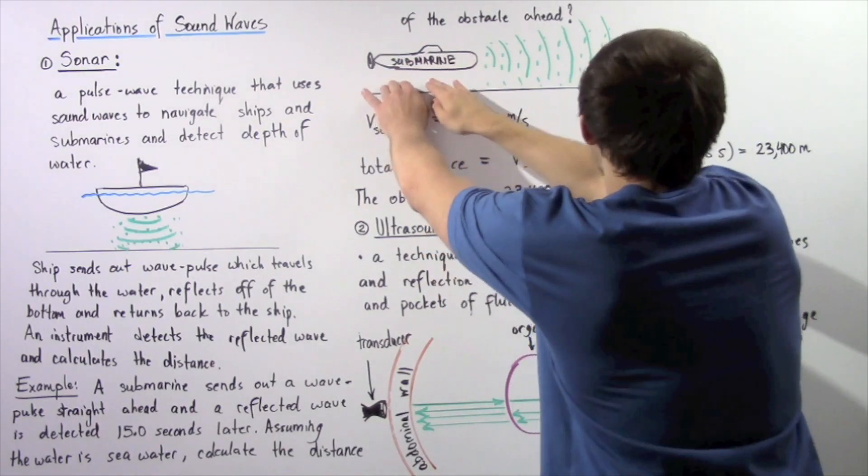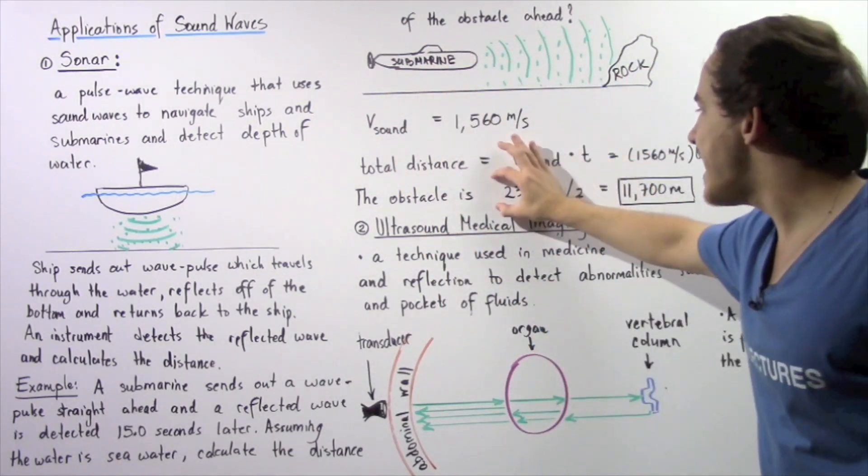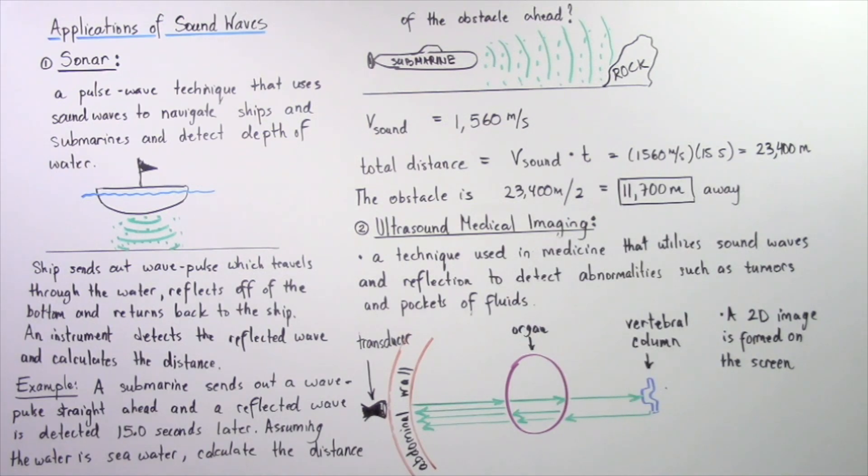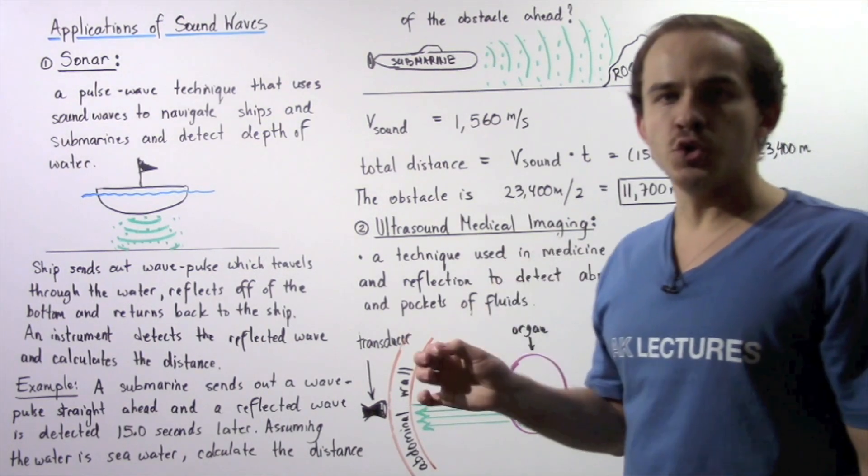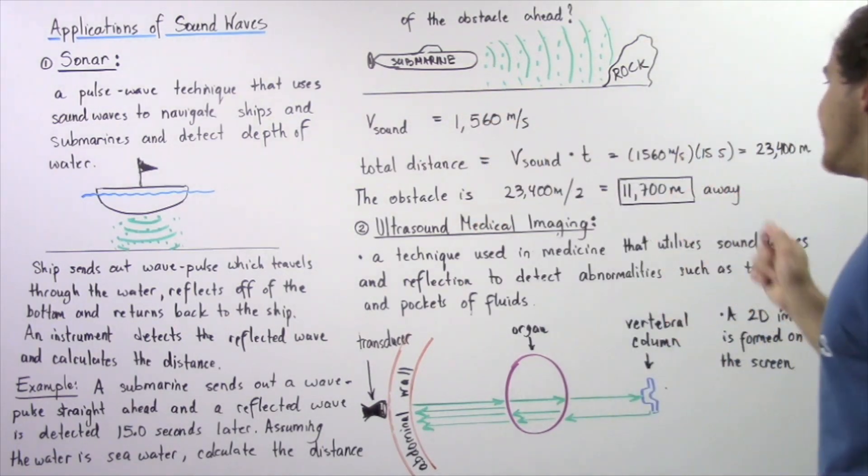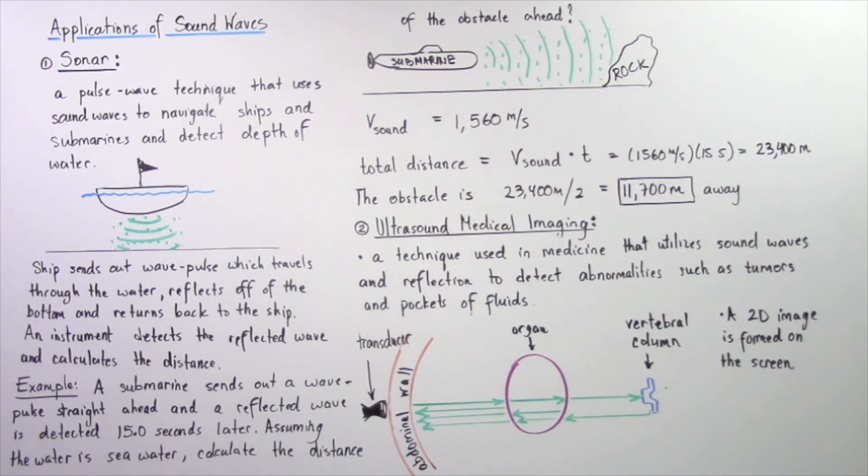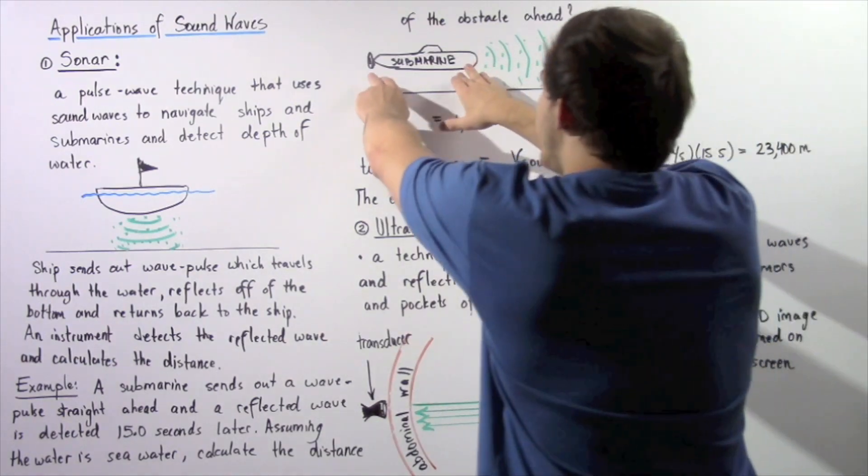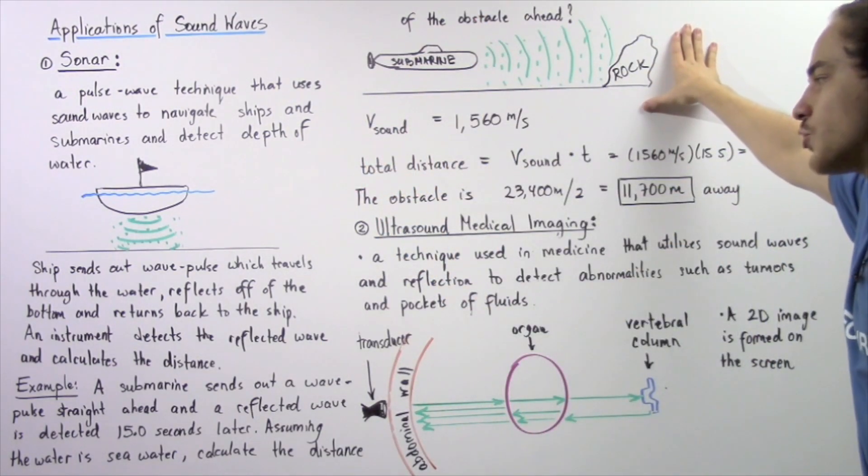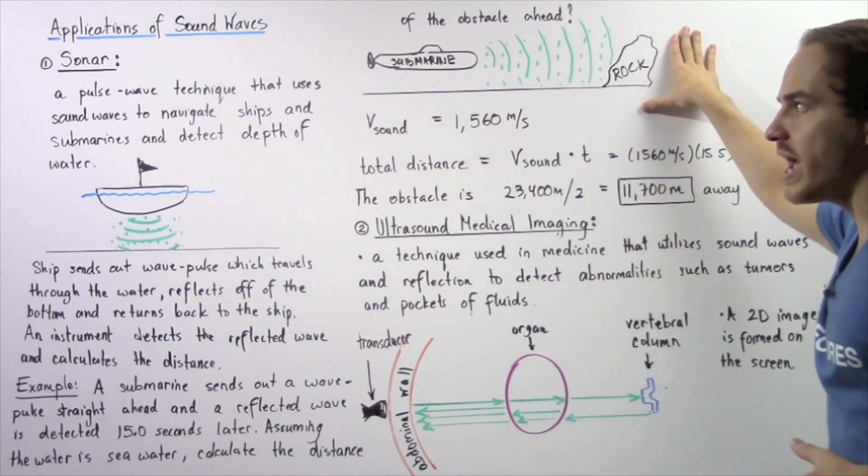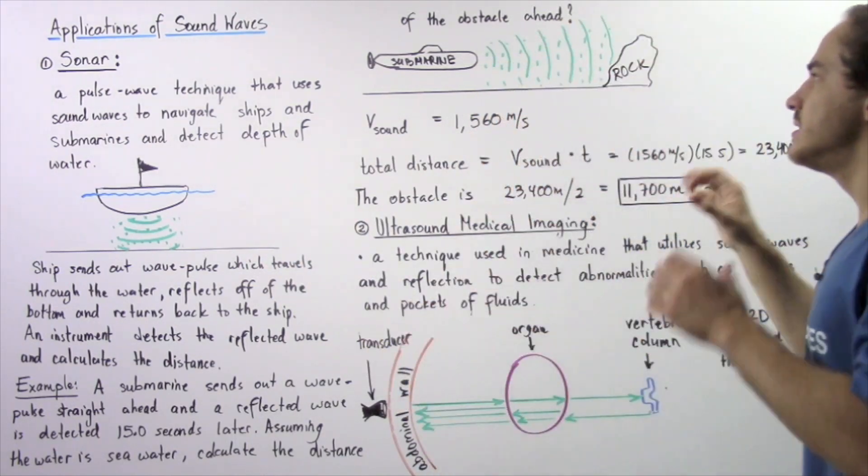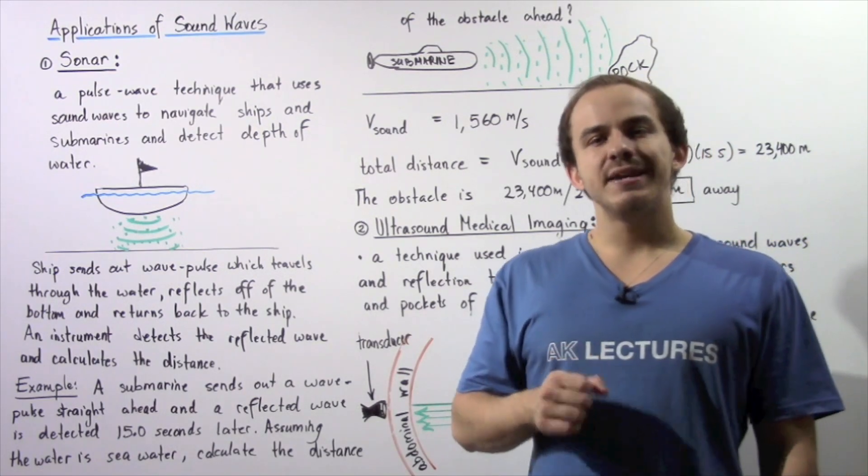To find the distance from the submarine to the rock, we simply take this value of 23,400 meters and divide it by two, because we're looking for half the total distance. We get 11,700 meters, the distance between the nose of the submarine and our obstacle. This is one way that the sonar technique can be used.